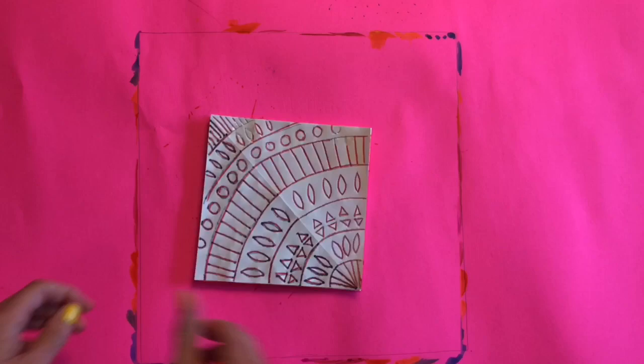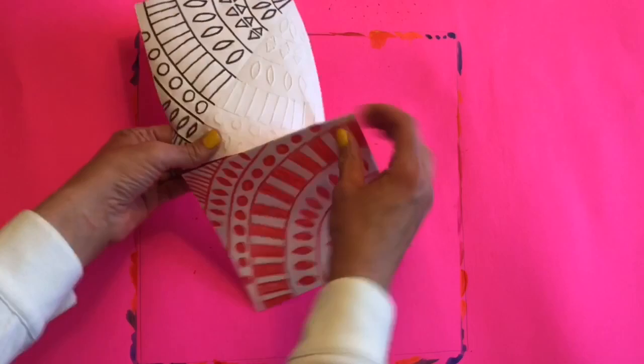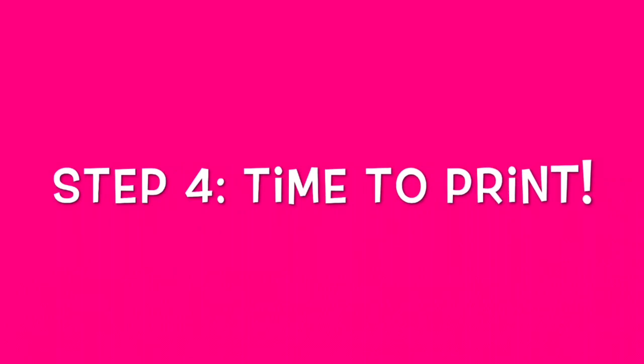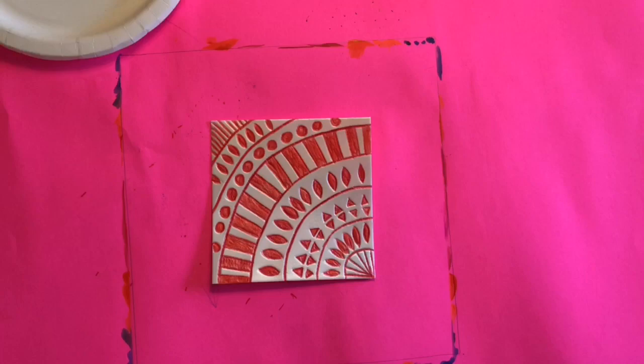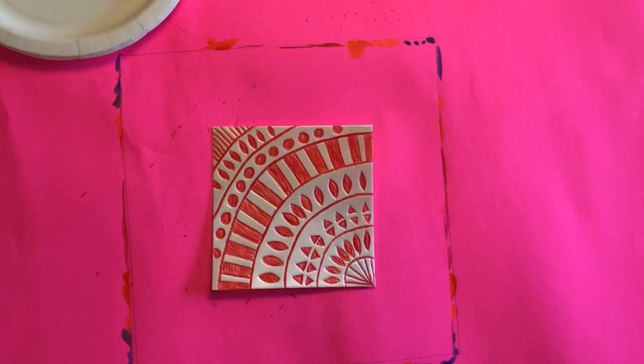Then flip it back over and take off your paper. So now that I've got my arrow and my name on the back of my printing plate in sharpie, the next step is to print.